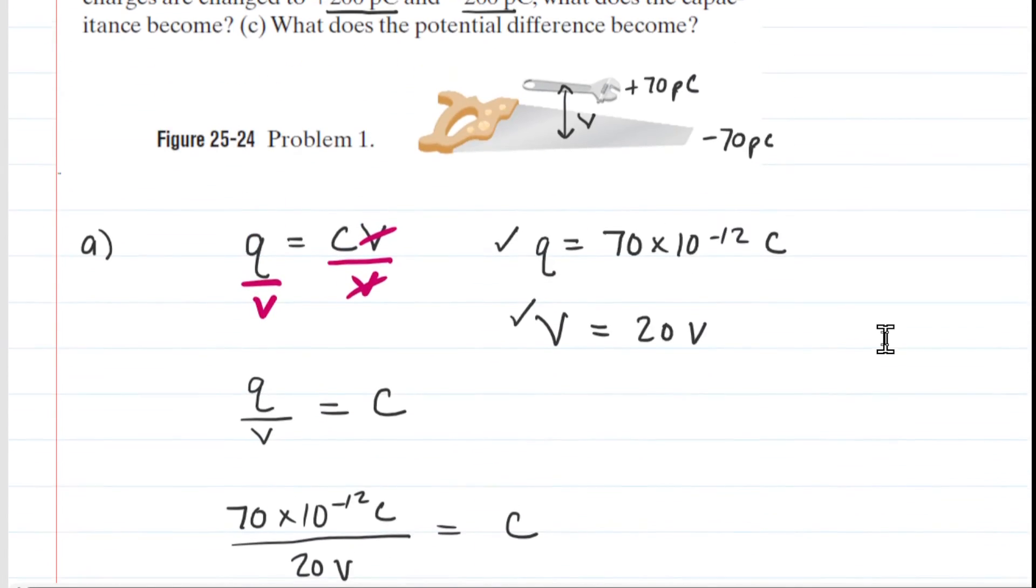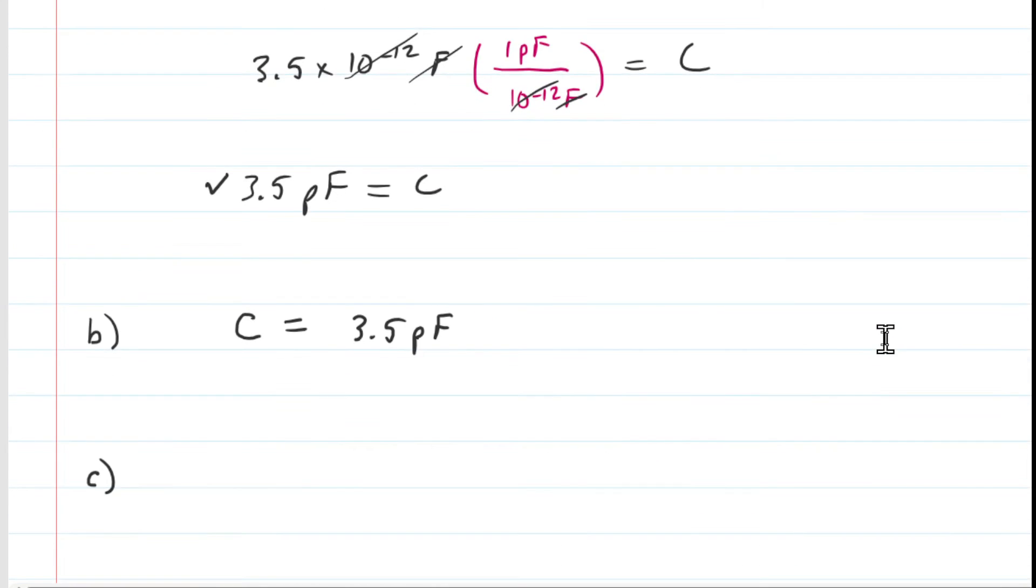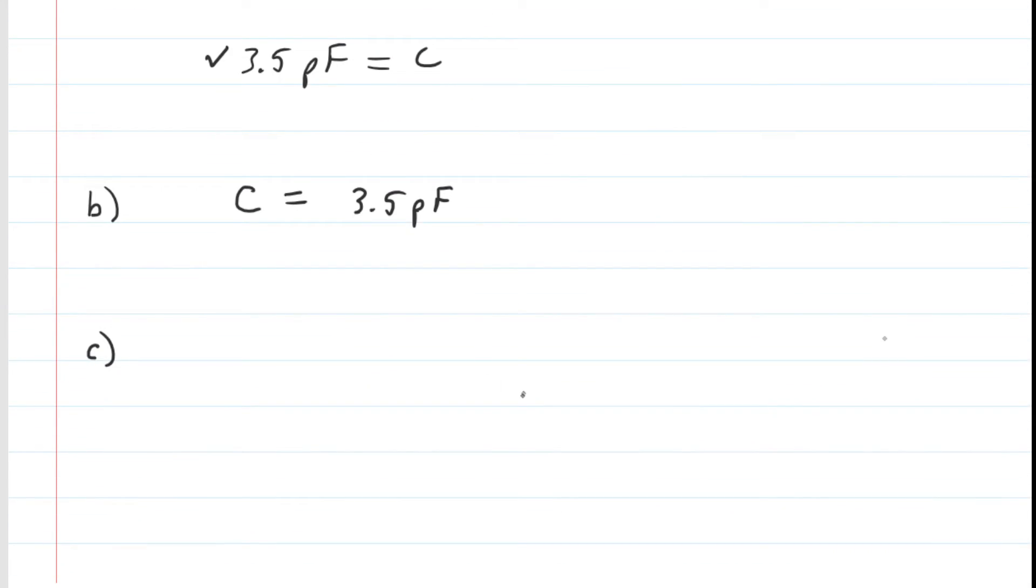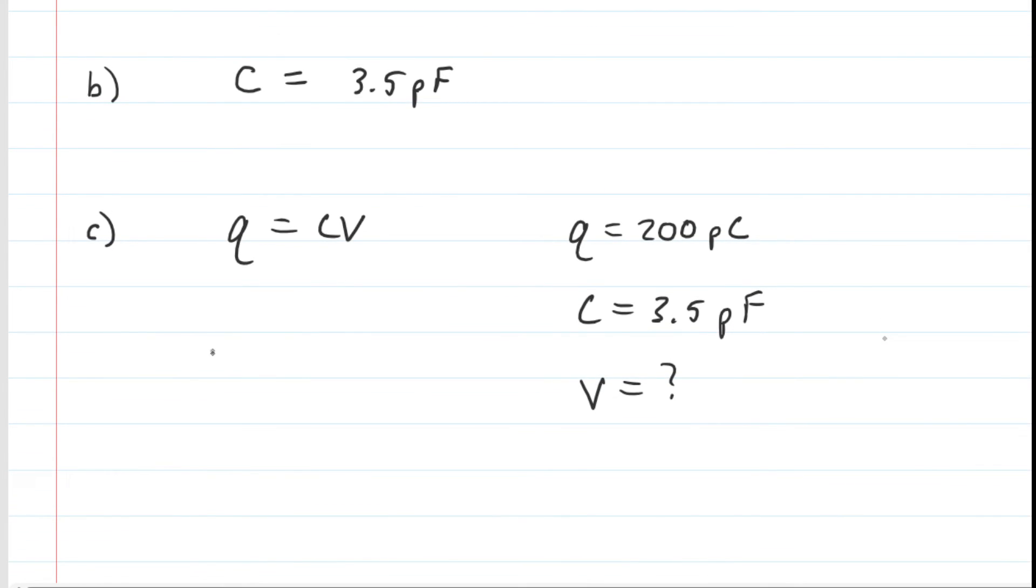And then in part C of the question, we want to know the potential difference once we've increased the charge to 200 picofarads. So let's write down, or 200 picocoulombs, excuse me, let's write down the known values here. And we return to this equation that relates these three quantities together. We're trying to solve for the potential difference, so this time we'll divide by capacitance. So we get charge over capacitance is equal to potential difference.